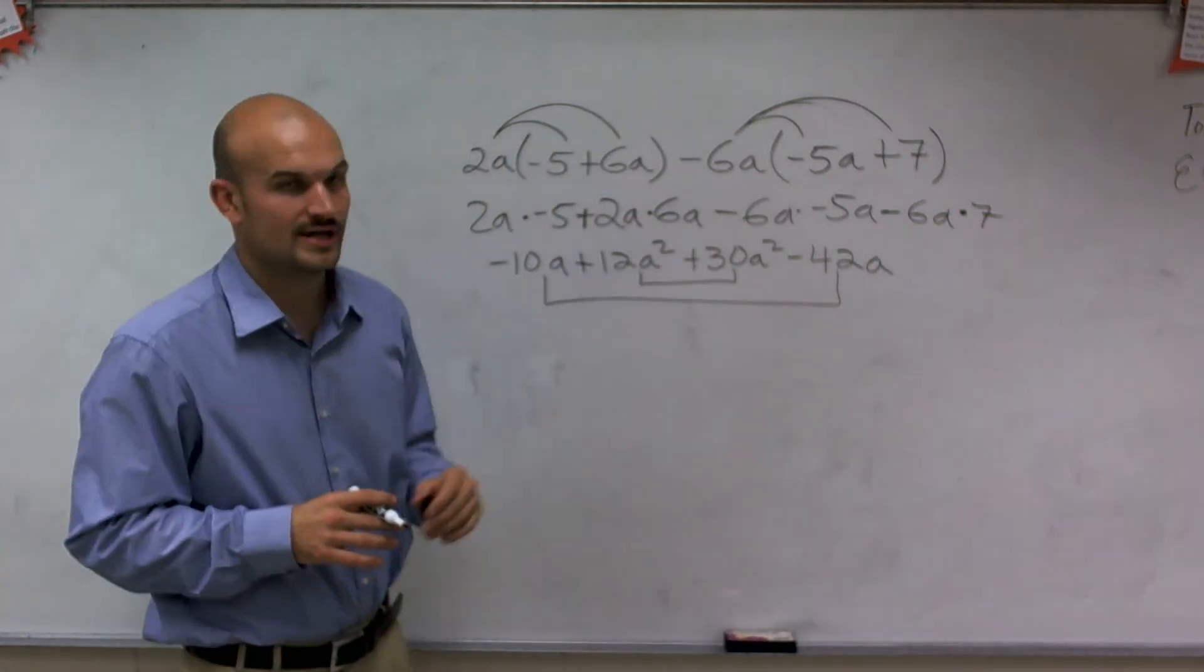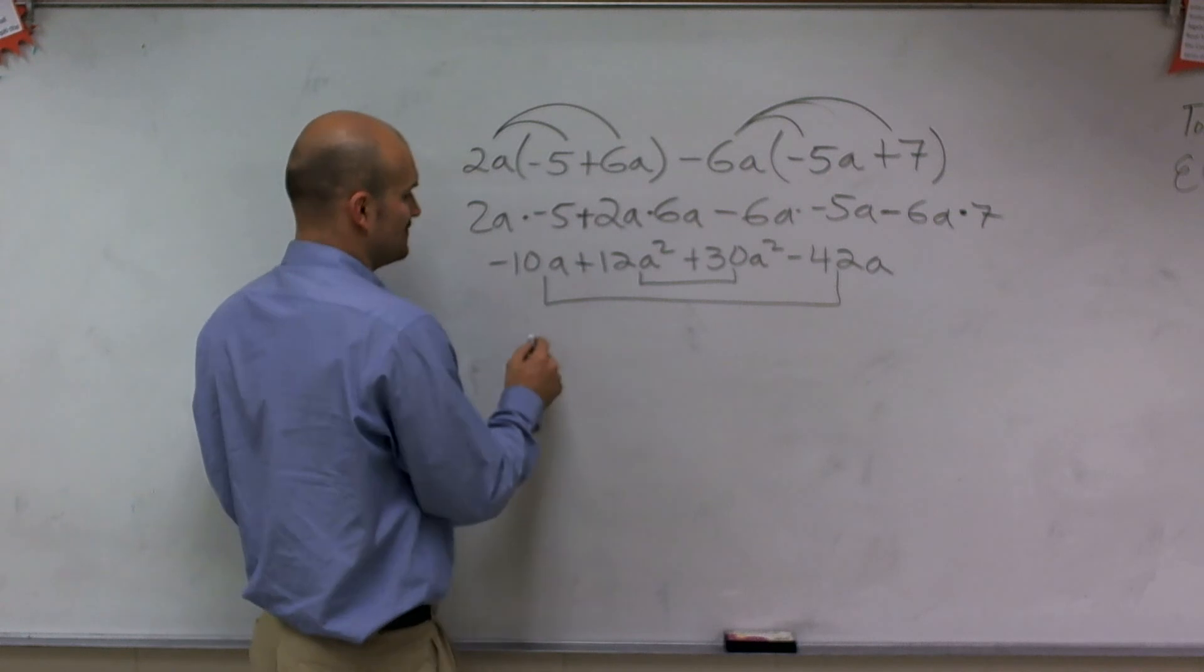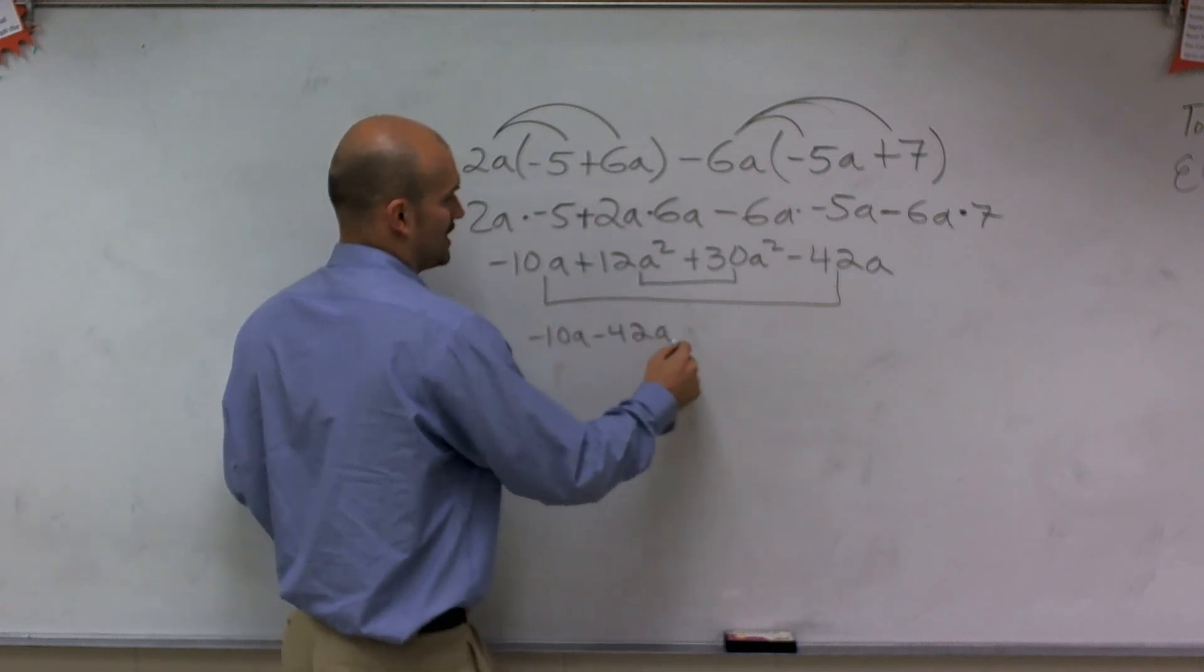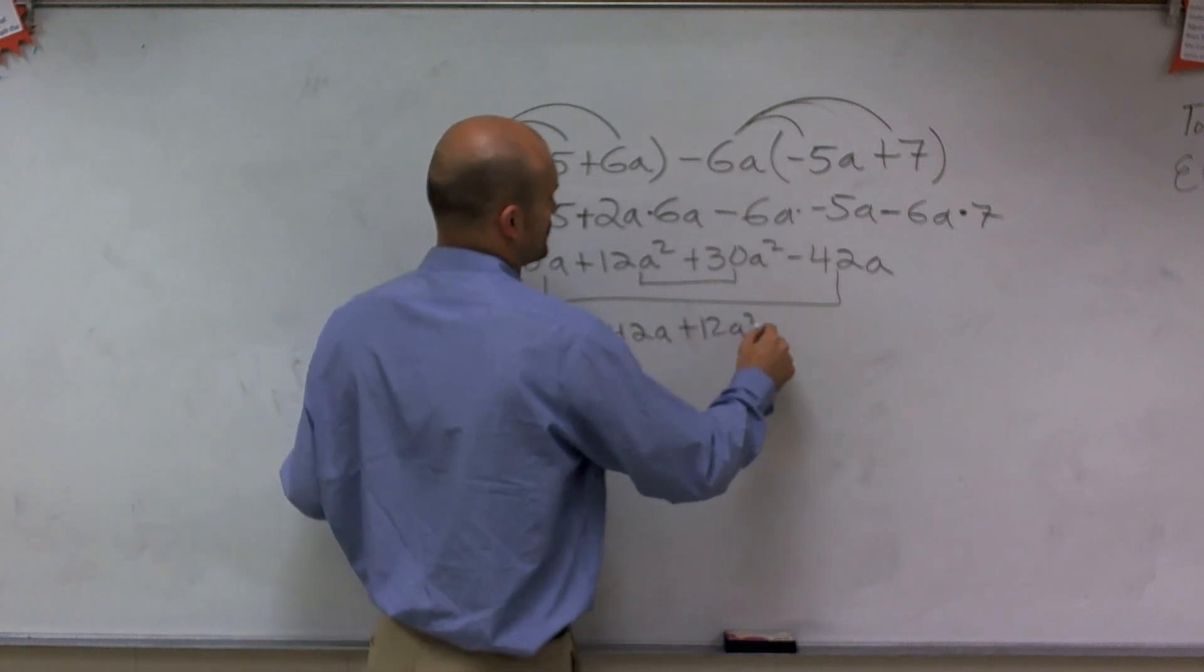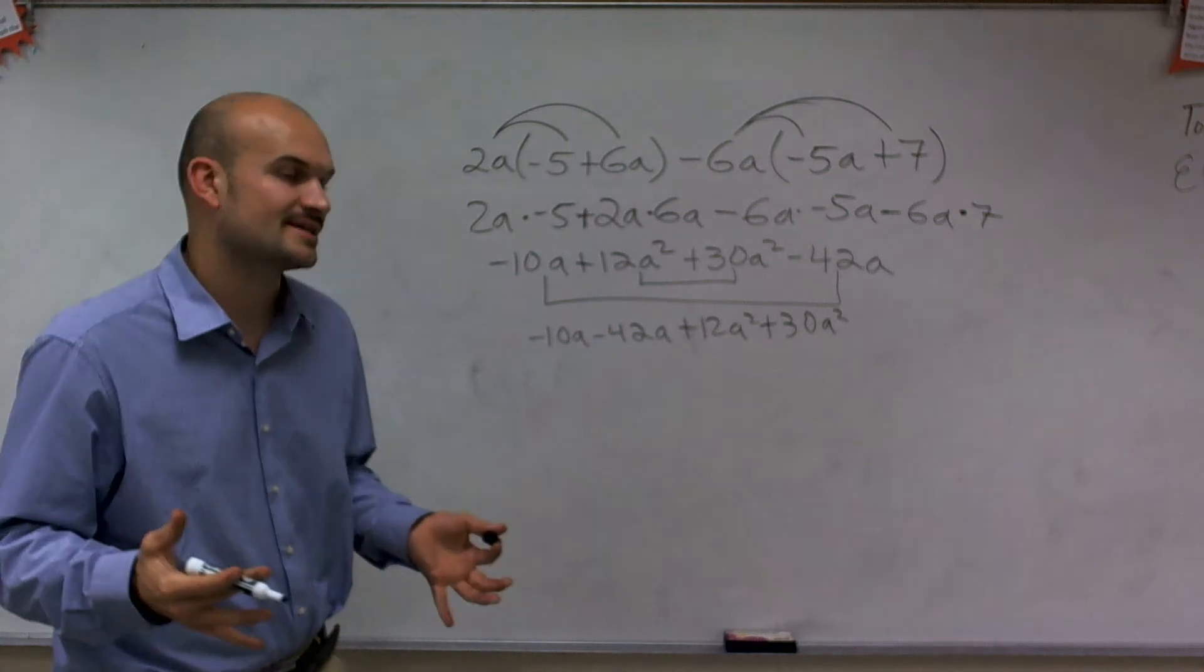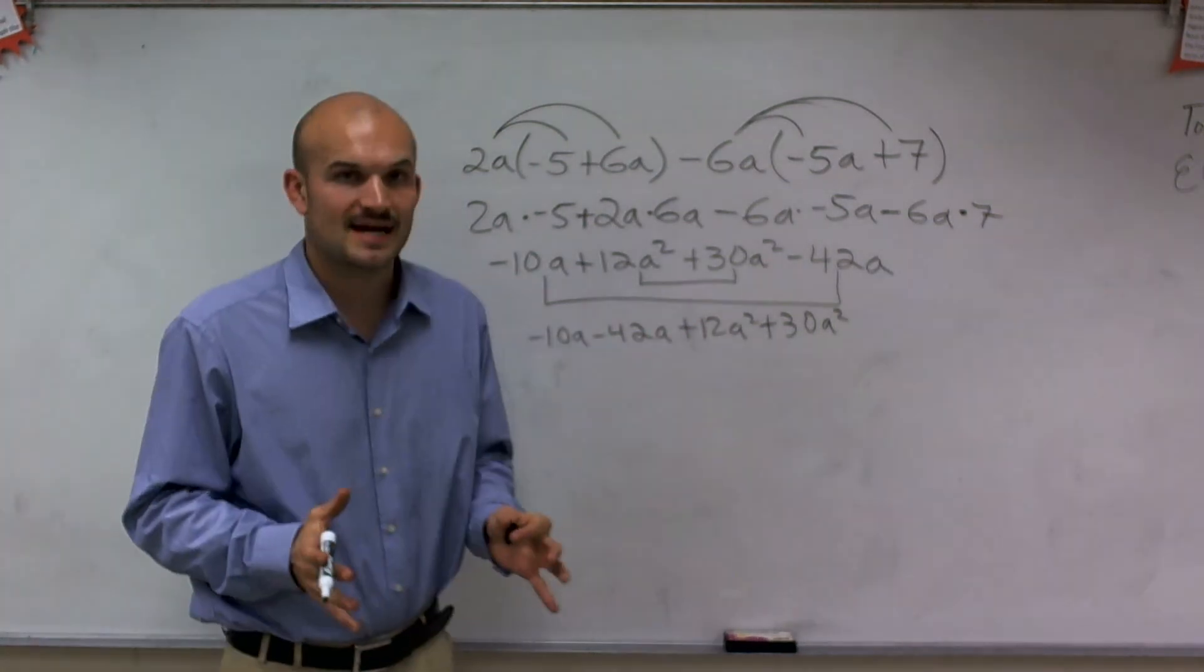Or this is 12a squared plus 30a squared. So negative 10a minus 42a plus 12a squared plus 30a squared. So what I did is I just rewrote the expression with the like terms next to each other.